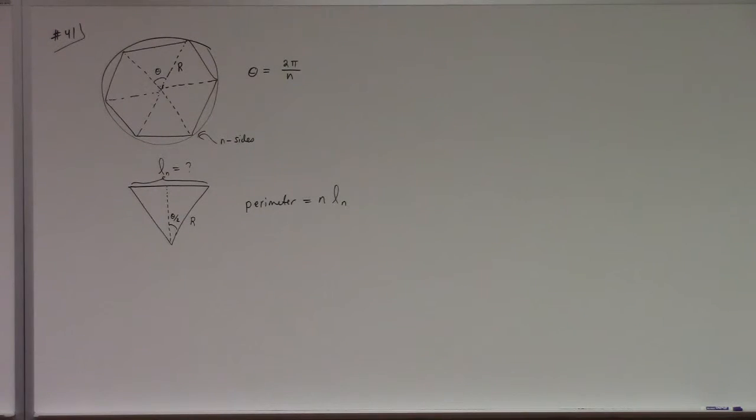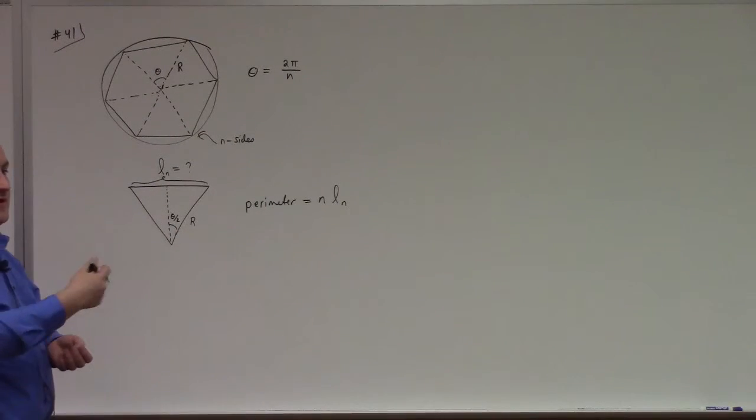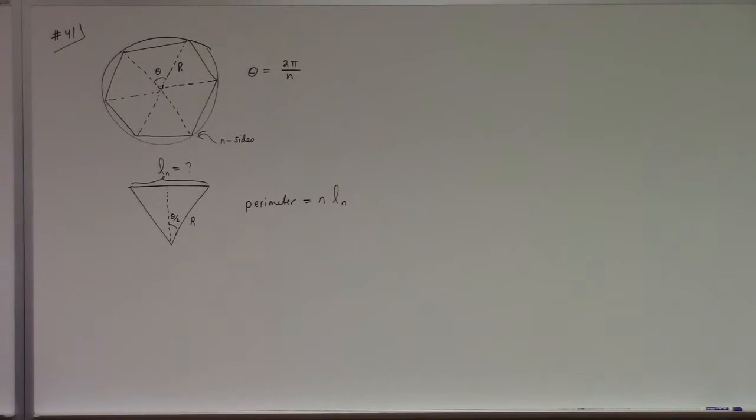Then this angle is theta over 2. My hypotenuse length is R. So all you've got to do is figure out what's this length, right? That's trigonometry. I'll leave it to you. Once you do that, N times L sub N would give you the perimeter, right? Does that make sense? I mean, I need to set it up in terms of N. So you have to imagine dividing it into N equal sectors.